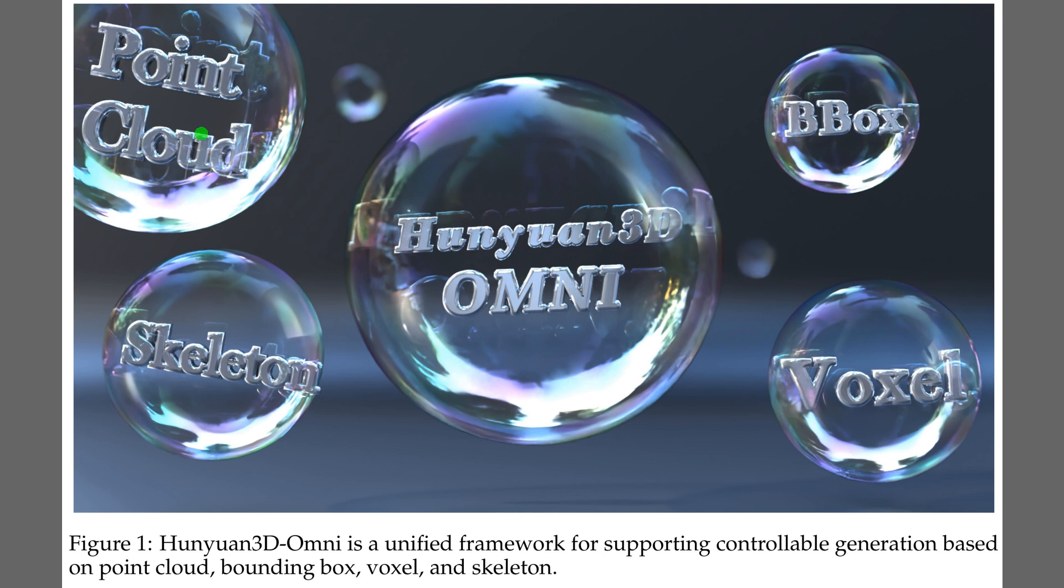The top left bubble signals point cloud control, the bottom left bubble shows skeleton control, meaning bone positions guide character pose. The top right bubble marks bounding box control, and the bottom right bubble denotes voxel control.